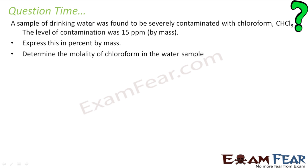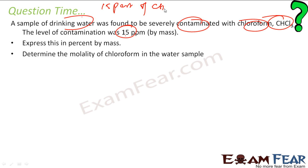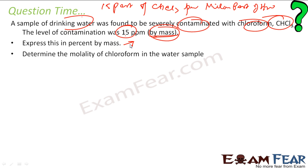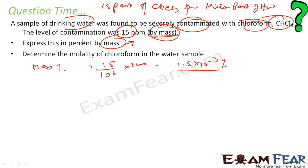Drinking water was found to be contaminated with chloroform (CHCl3), and the level of contamination was 15 ppm — that is, 15 parts of CHCl3 per million parts of water, by mass. We have to find this as percent by mass. Mass percent = 15 / 10⁶ × 100 = 1.5 × 10⁻³ percent. This is the mass percent of chloroform.